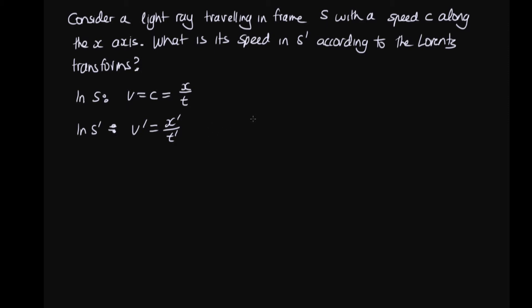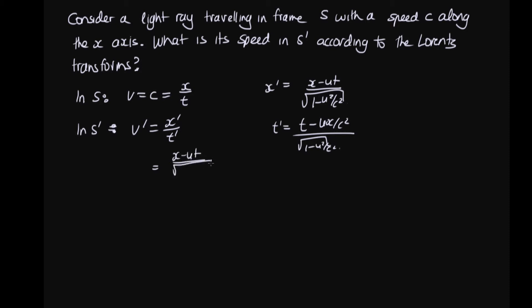The Lorentz transforms tell us that X' is equal to X minus UT over the square root of 1 minus U squared over C squared, and T' is equal to T minus Ux over C squared over the square root of 1 minus U squared over C squared. Substituting these in, we get (X minus UT) over the square root of 1 minus U squared over C squared, divided by (T minus Ux over C squared) over the square root of 1 minus U squared over C squared. We can cancel out the common denominator on the top and bottom, giving us (X minus UT) over (T minus Ux over C squared).